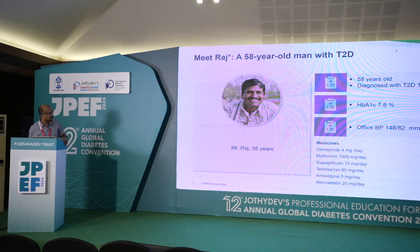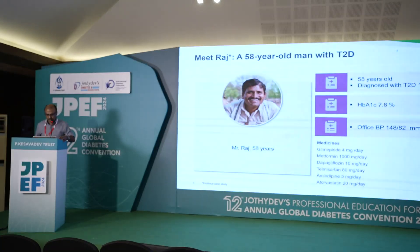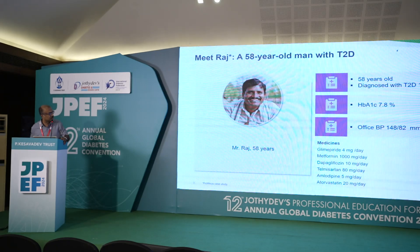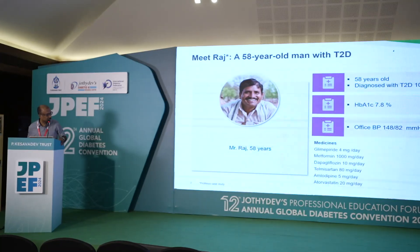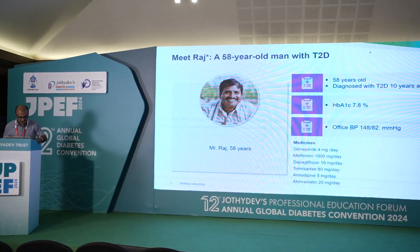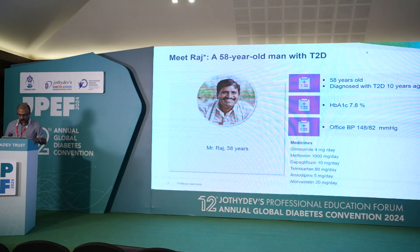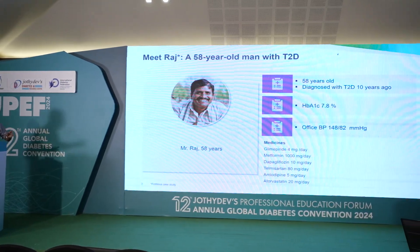Here is a case to highlight the importance of chronic kidney disease in people with type 2 diabetes. This is a 58-year-old gentleman diagnosed with diabetes for 10 years. His A1C is around 7.8, blood pressure is on the higher side. He is already on multiple medications including glipizide, dapagliflozin, telmisartan, amlodipine, and atorvastatin — so from a medication perspective, reasonably well managed, though not fully optimized.